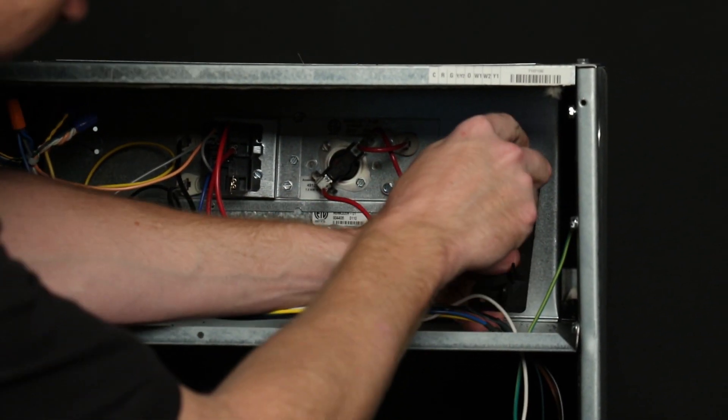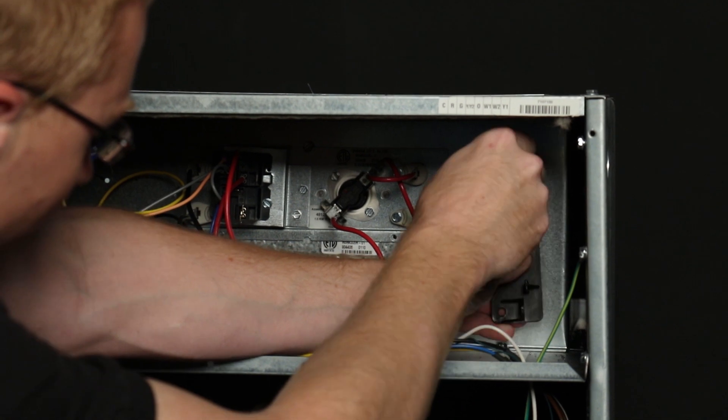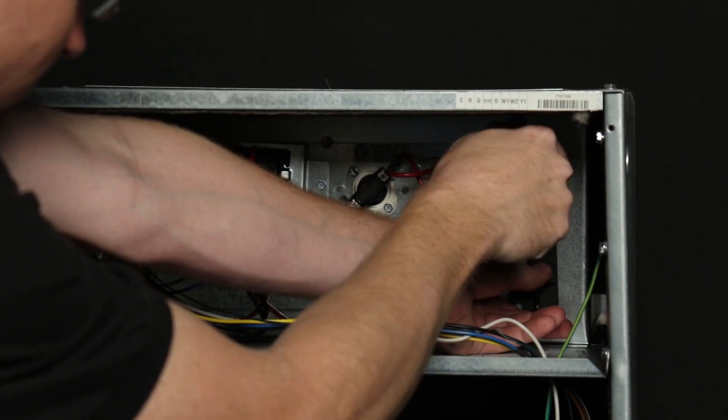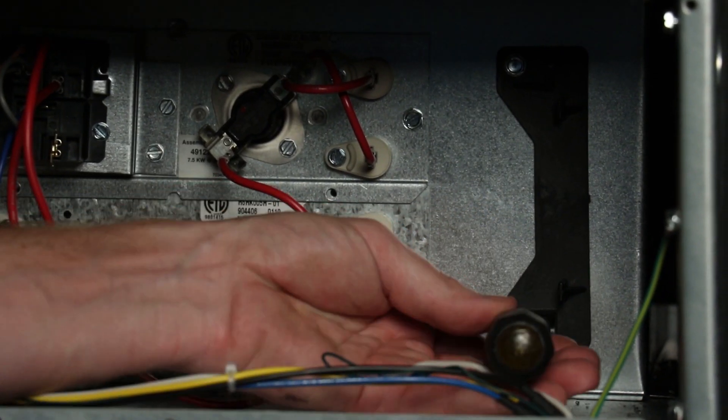Step six is to install the mounting bracket. Identify a good location, usually in the electrical box, with sufficient clearance to mount the board.